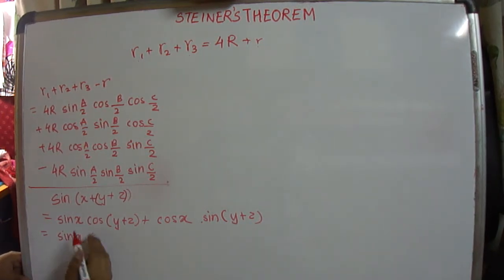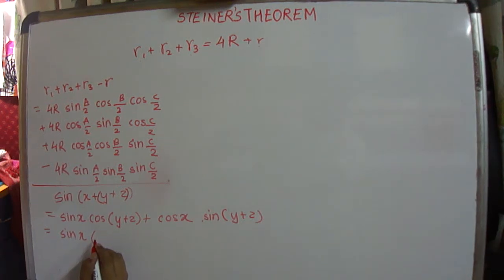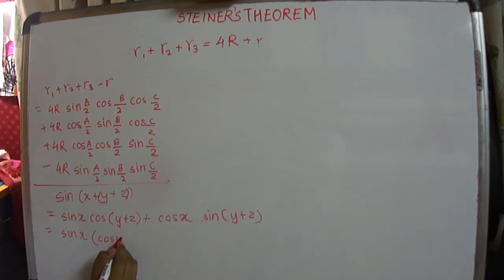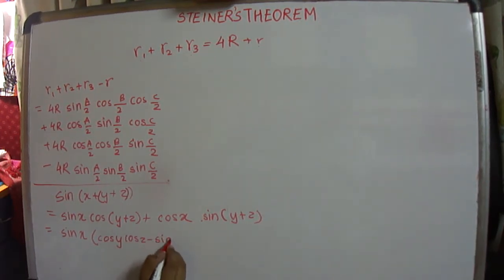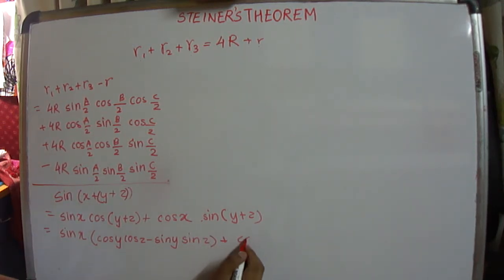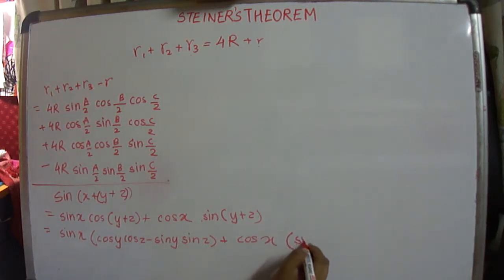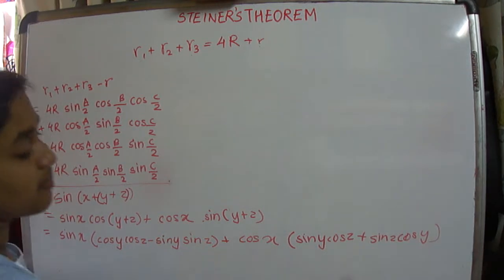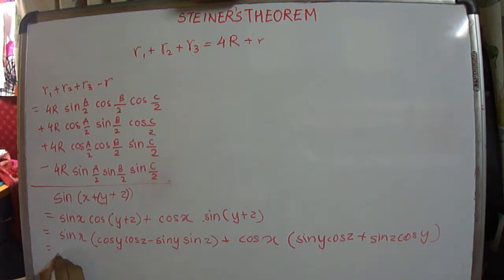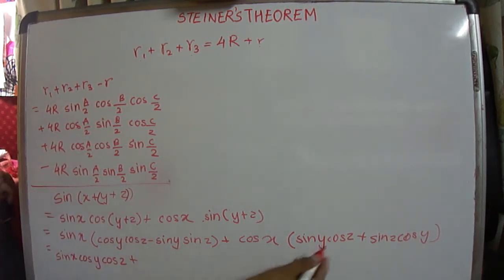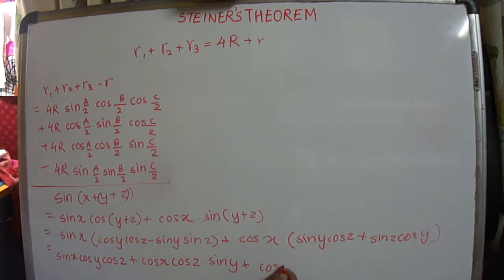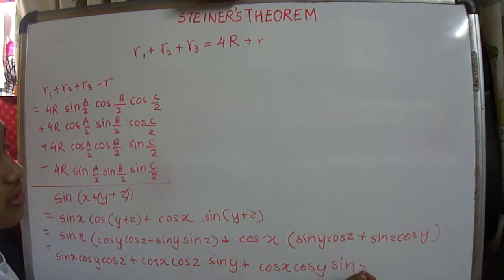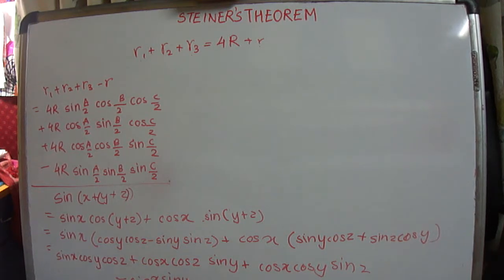Expanding further, sin(X+Y+Z) equals sin(X)cos(Y)cos(Z) minus sin(X)sin(Y)sin(Z) plus cos(X)sin(Y)cos(Z) plus cos(X)cos(Y)sin(Z) plus sin(X)cos(Y)cos(Z). This gives us the full expansion: sin(X)cos(Y)cos(Z) plus cos(X)sin(Y)cos(Z) plus cos(X)cos(Y)sin(Z) minus sin(X)sin(Y)sin(Z).